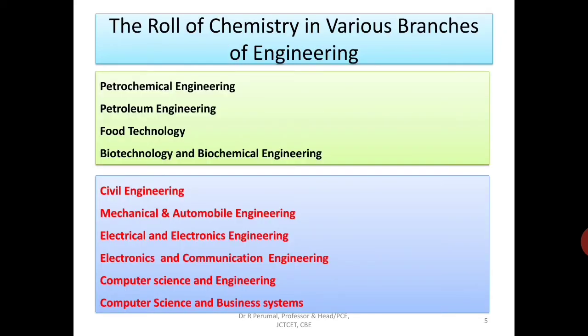Now, the role of chemistry in various branches of engineering. Chemistry is applicable in petrochemical engineering, petroleum engineering, food technology, biotechnology and biochemical engineering — these are branches where chemistry plays a vital, major role.